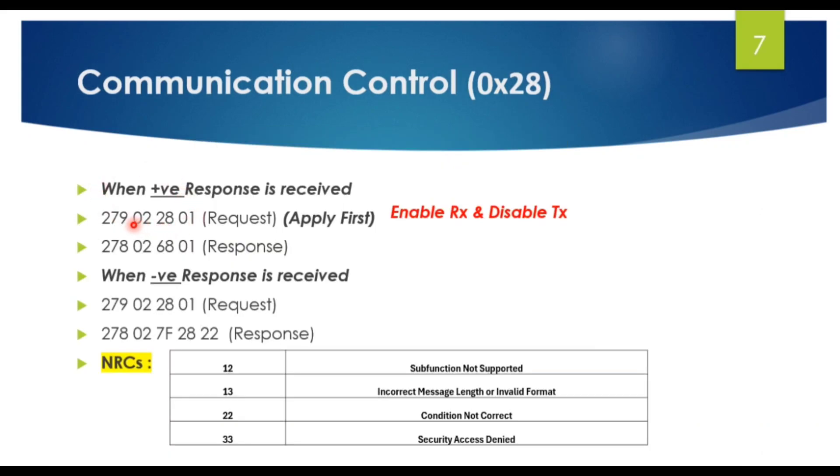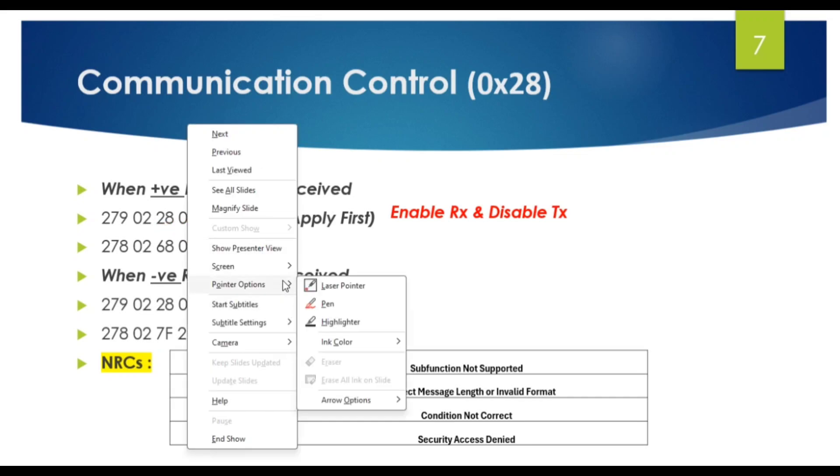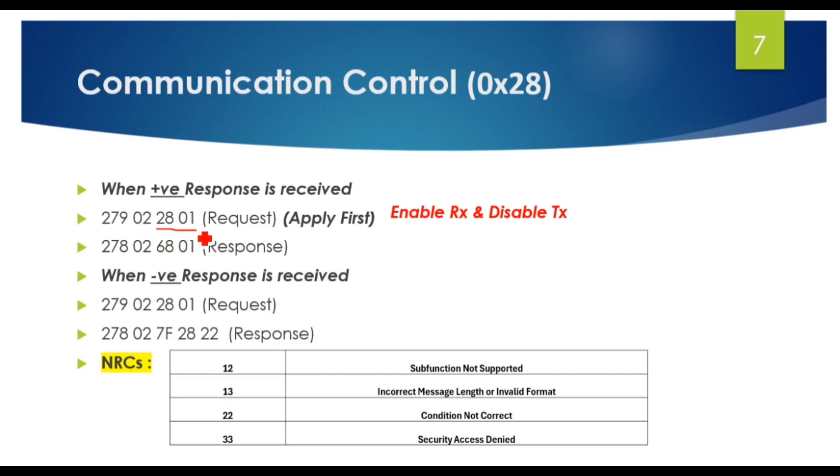For communication control, when requesting this service ID, always use 0x2801 first. This will enable RX and disable TX. You will not be able to transmit messages; all the transmitting messages will be stopped or disabled. You will only be able to receive messages from the ECUs.